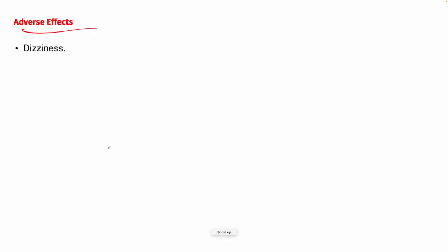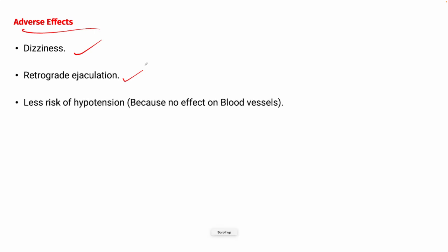Adverse effects of tamsulosin: dizziness, retrograde ejaculation, and less risk of hypotension — since it has no effect on alpha-1b receptors in blood vessels. Retrograde ejaculation occurs when semen enters the bladder instead of emerging through the penis during orgasm.